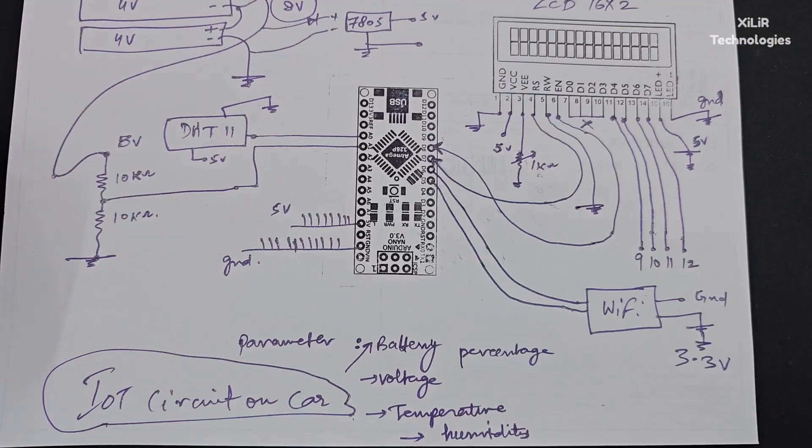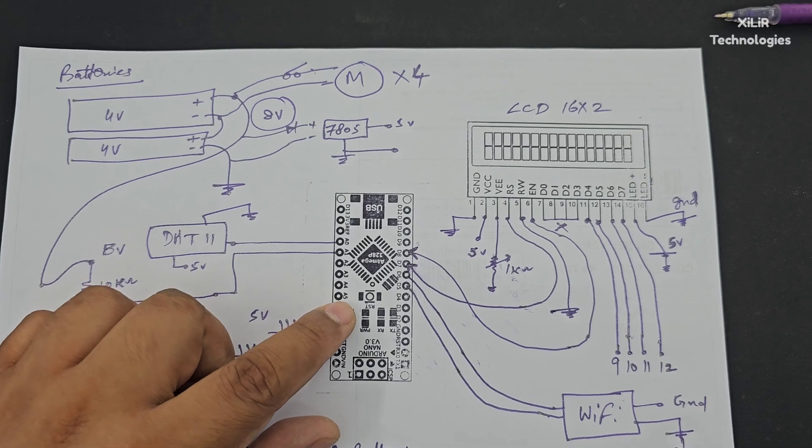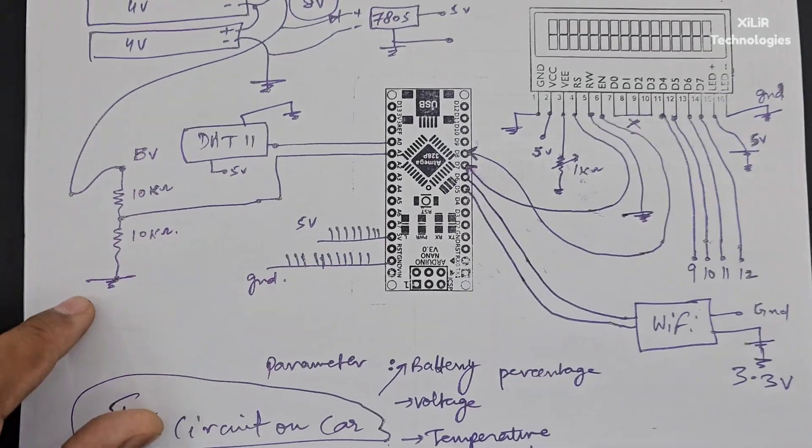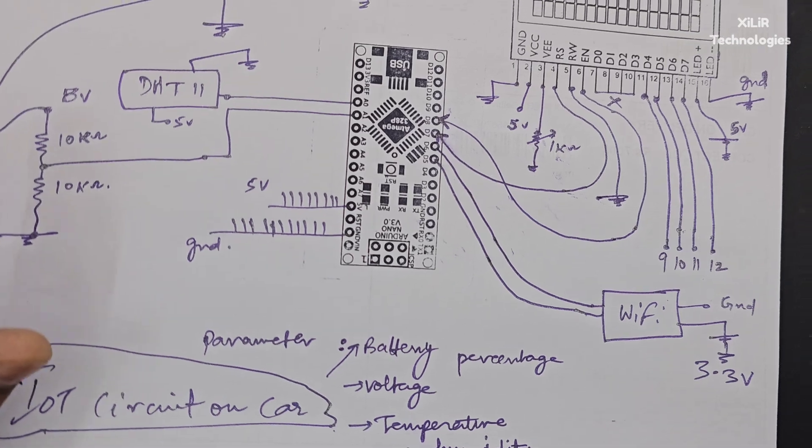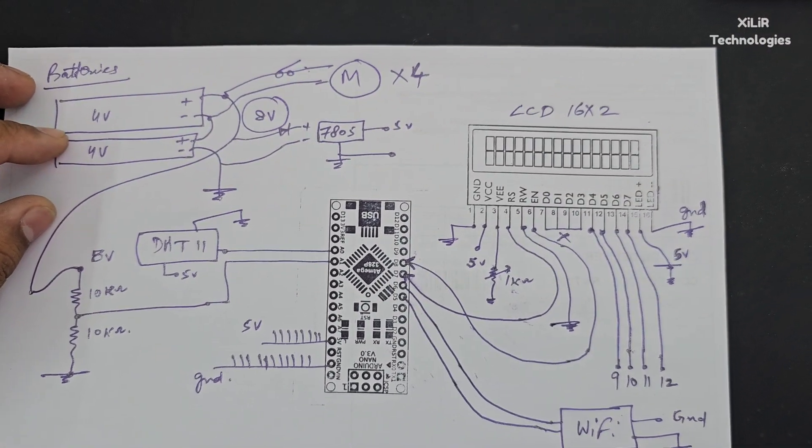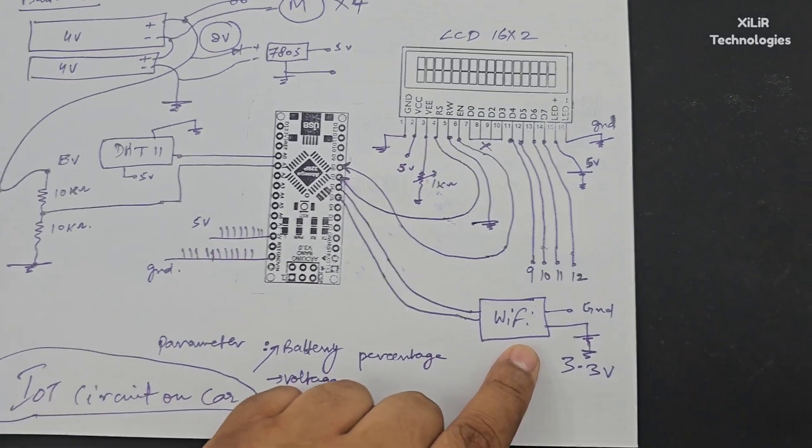This part is for your car part. On the car you have this Arduino Nano, then DHT11 is there to show temperature and humidity. We have a voltmeter to sense the voltage of this battery and it will display here. WiFi is there to display all parameters on the web server.